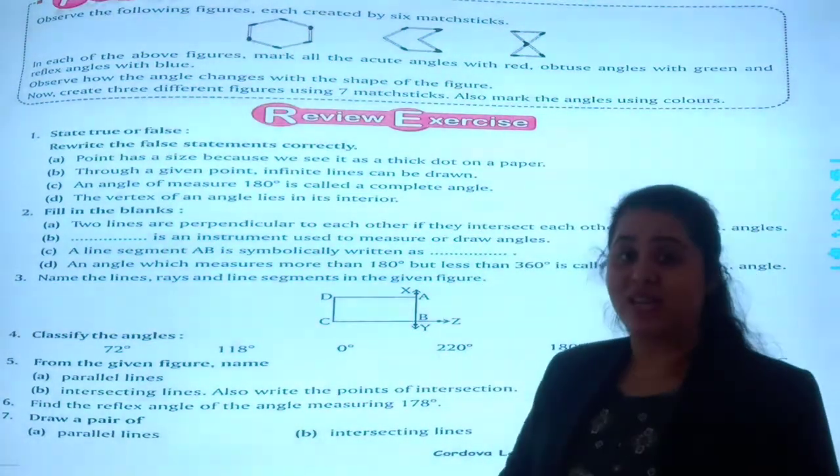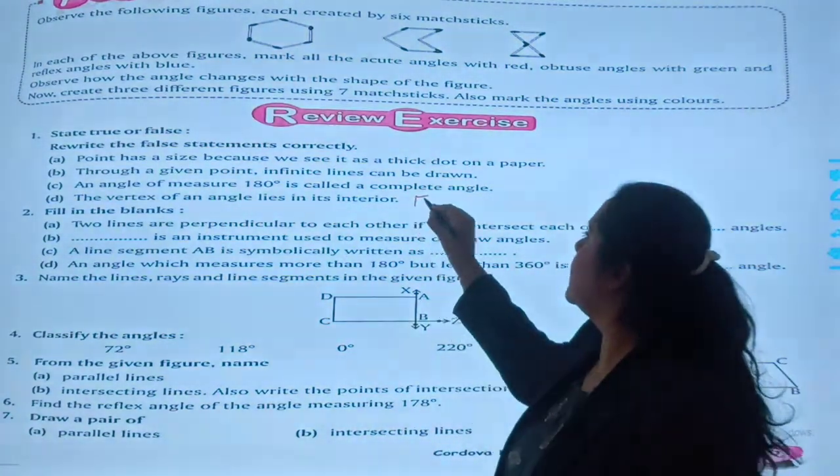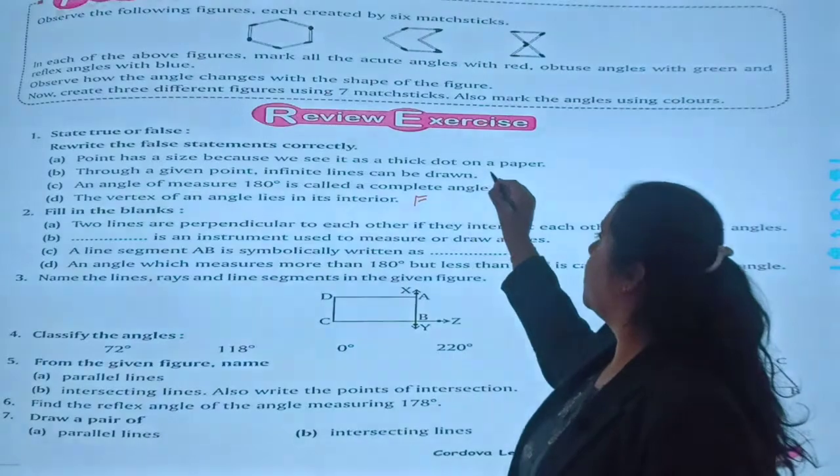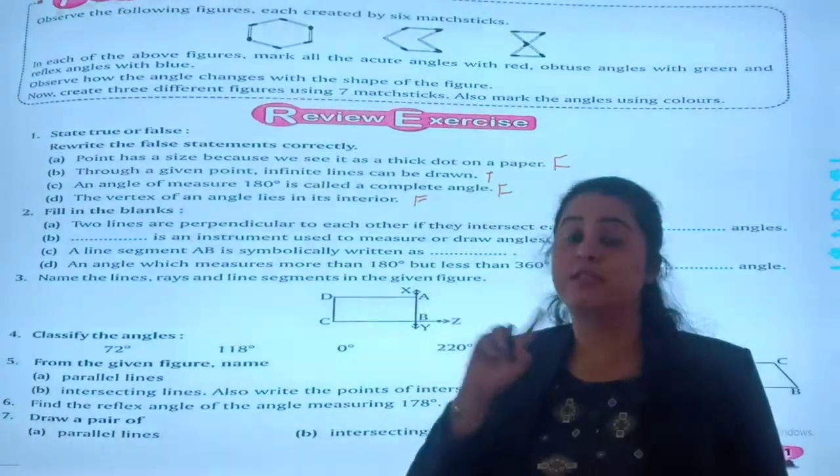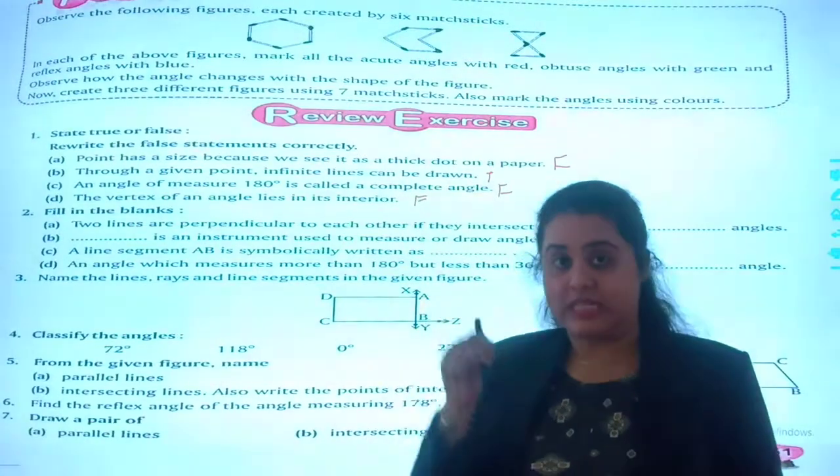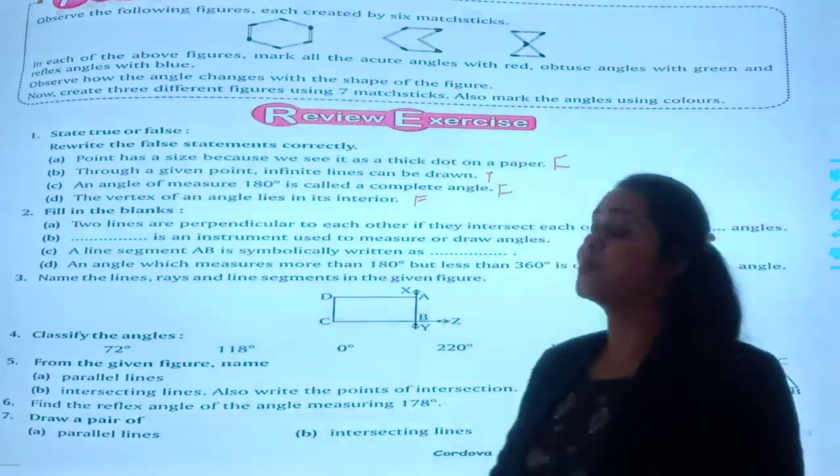The fourth one is, the vertex of an angle lies in the interior? No. The vertex of the angle is not in the interior, but it is on the line.